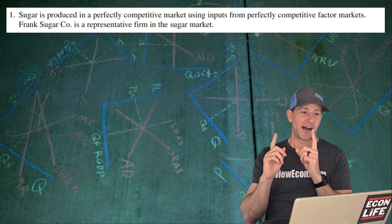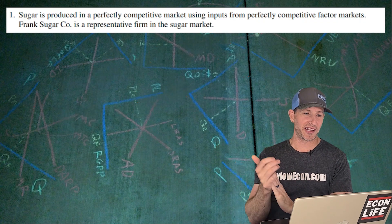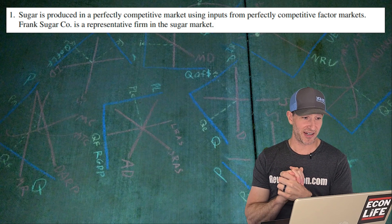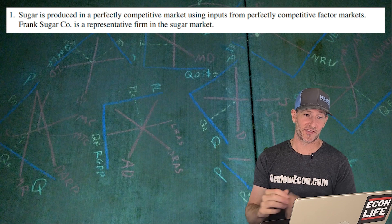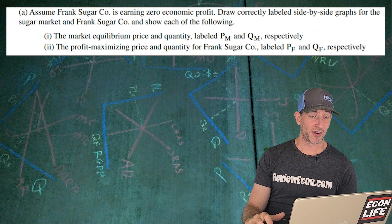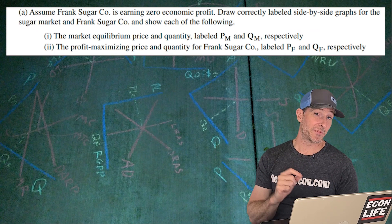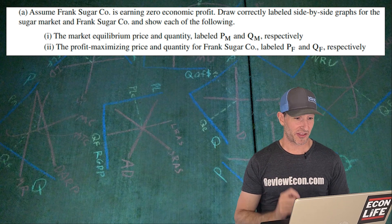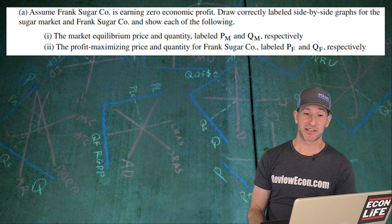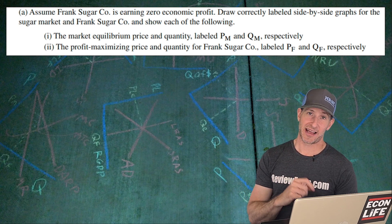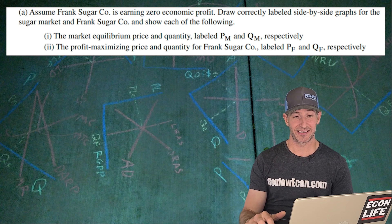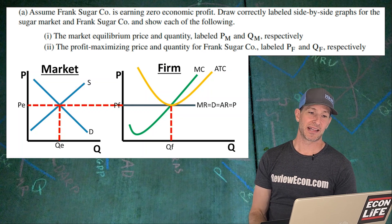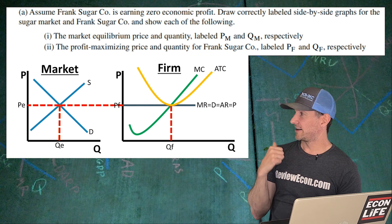Let's go ahead and jump into it. First of all, we've got sugar is produced in a perfectly competitive market, and we use inputs from a perfectly competitive factor market. We're looking at Frank Sugar Company, and that's the firm in the sugar market. We're going to draw a side-by-side, properly labeled graph for this market and firm. We're going to mark the market price and quantity, PM and QM, and the firm's price, PF, and the firm's quantity, QF. Here we go. It's just the firm at long-run equilibrium because they are currently earning zero economic profit.